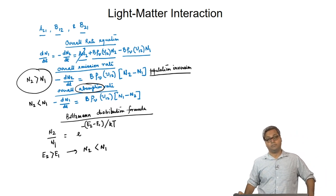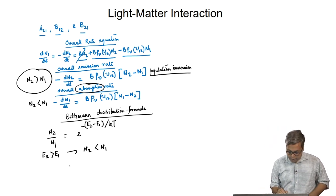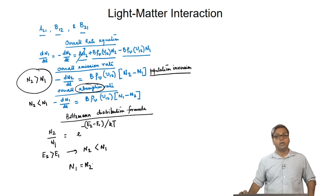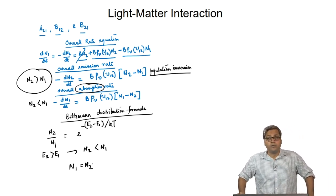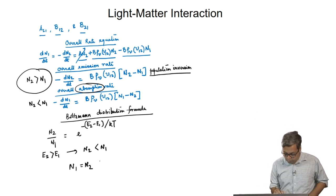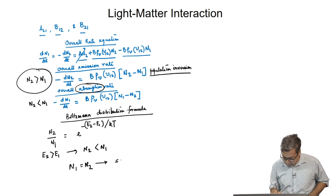Further, if we have N1 equals N2, there will be no net absorption or emission of radiation. This is known as the saturation condition.